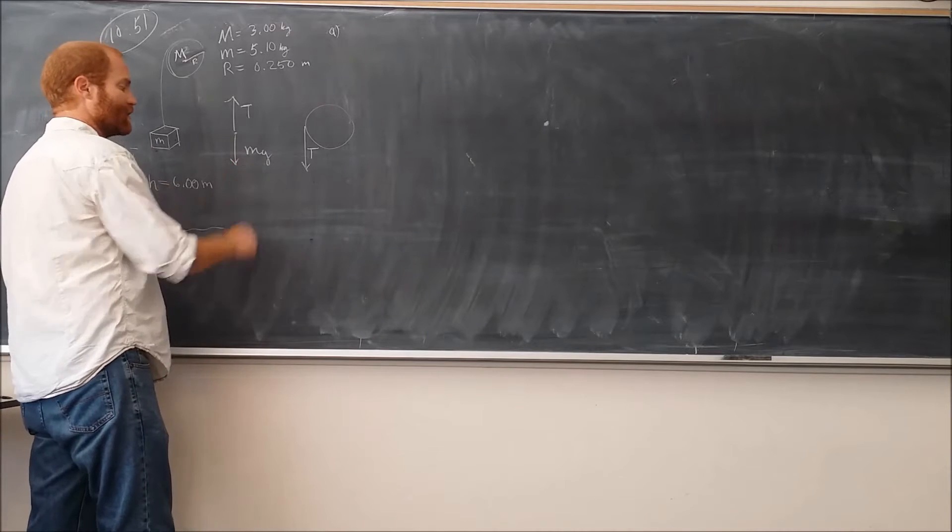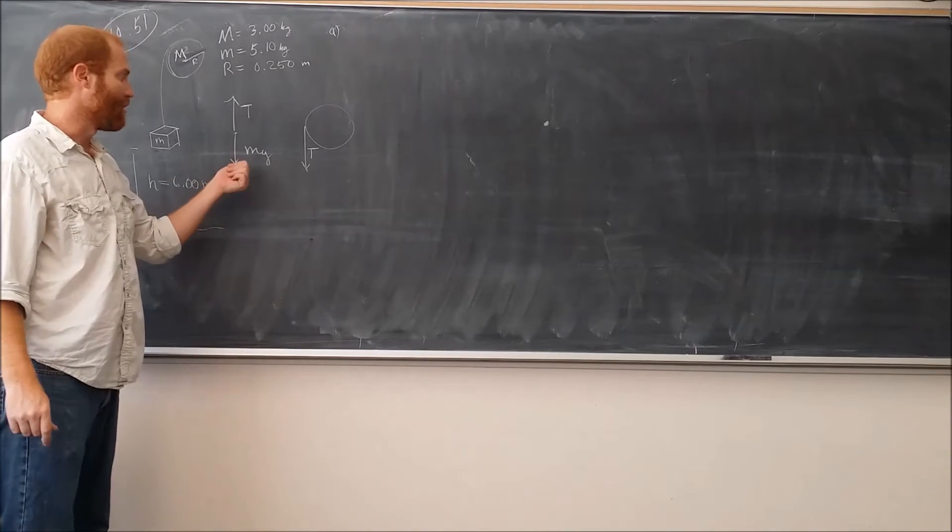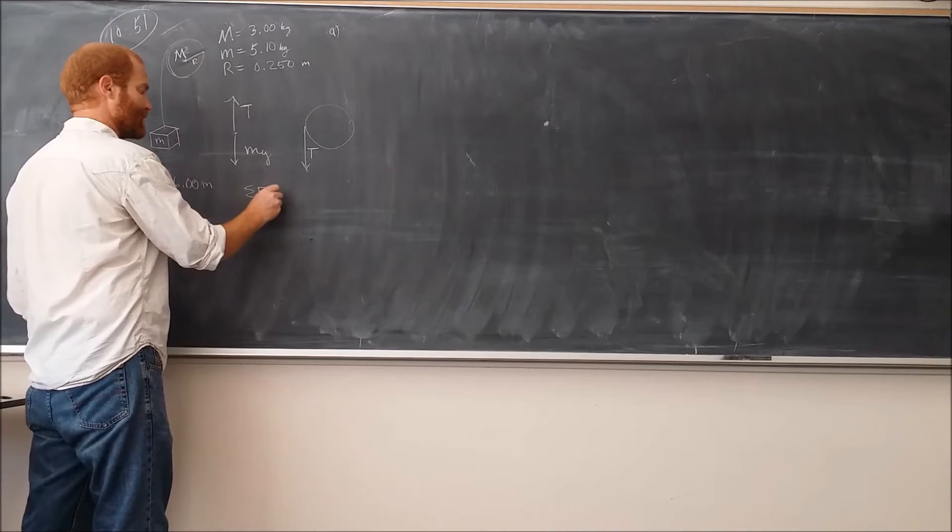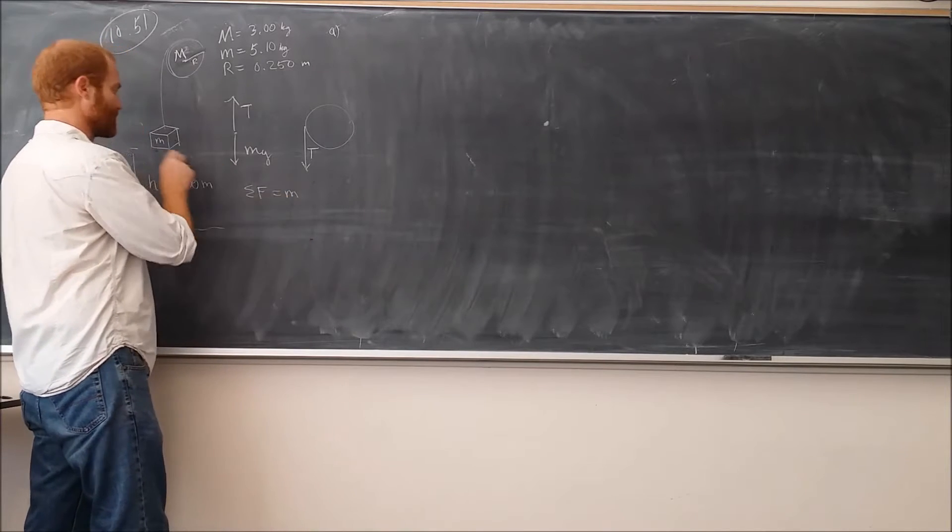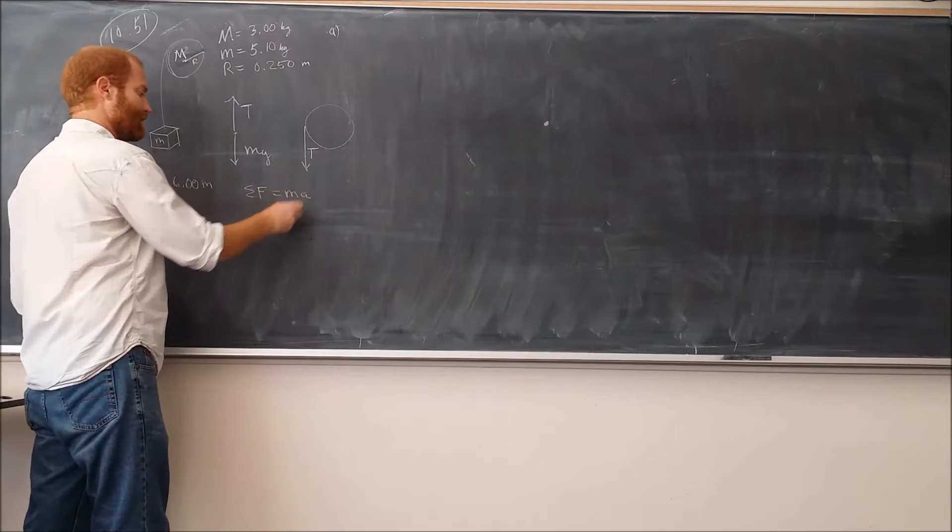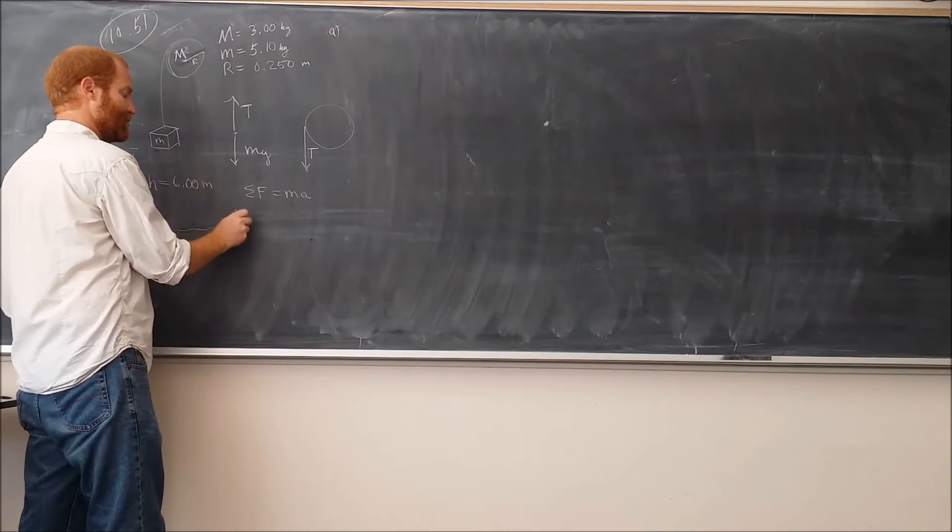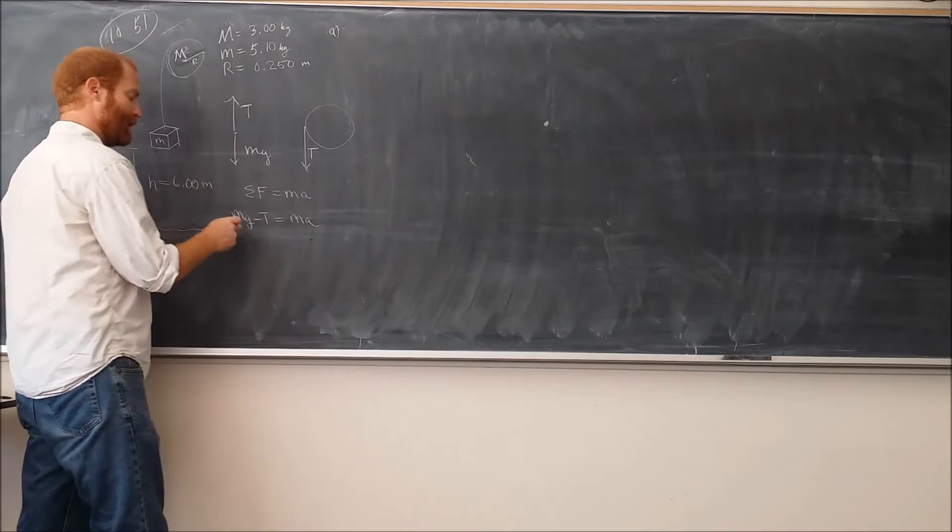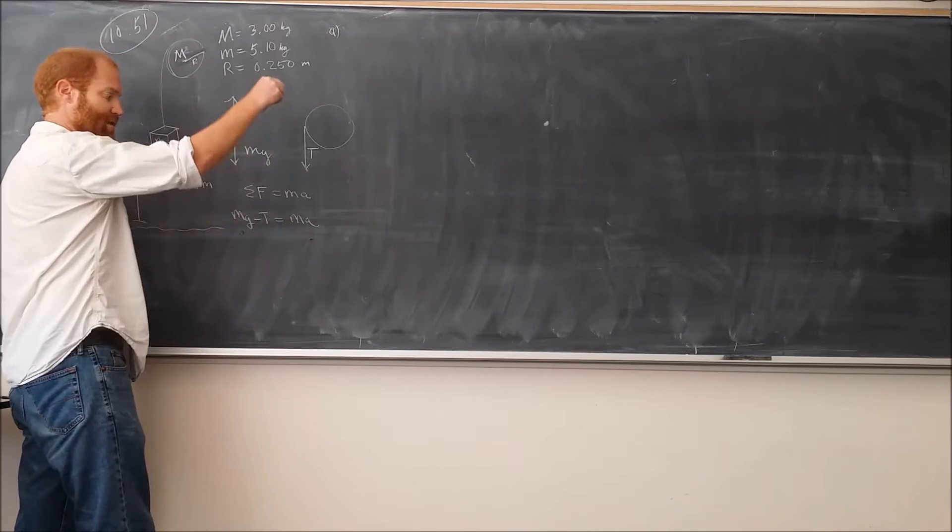Looking at just this one here, we can apply Newton's second law to this free body diagram here. We can say that the net force on this object has to be equal to the mass, so this is little m because we talked about the box here, times A. The net force is going to be mg minus T.